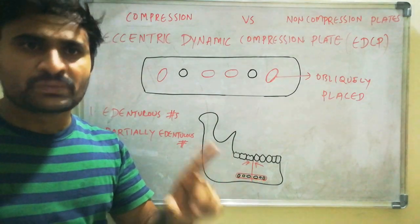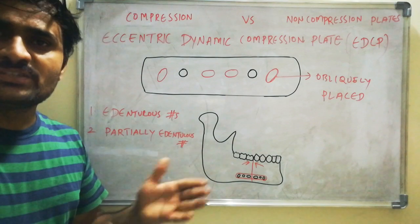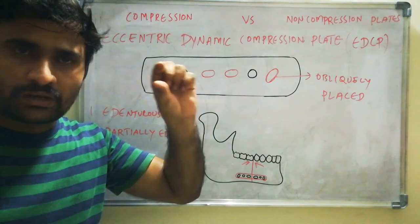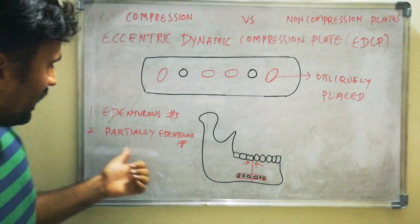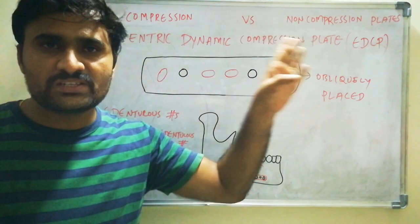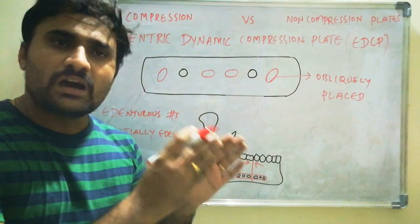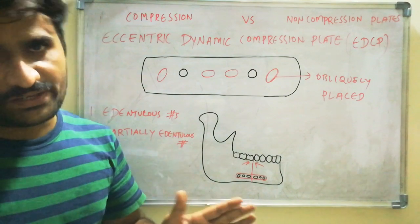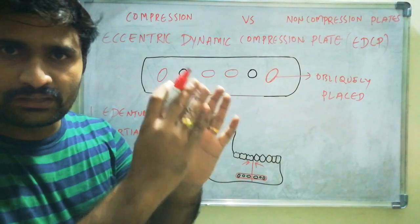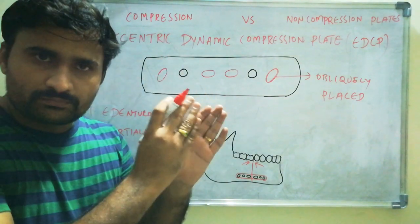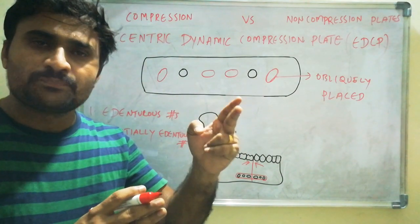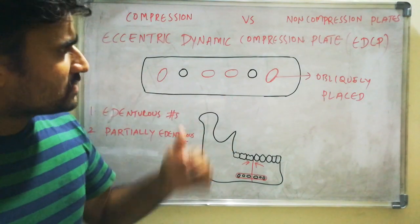EDCP is indicated in edentulous fractures where there are no teeth, so an arch bar cannot be placed, or where less bony height prevents using two plates. It is also used in partially edentulous fractures. Generally, compression plates are sparingly used; we prefer non-compression plates. There are two types of compression plates: the dynamic compression plate and the eccentric dynamic compression plate. One more way to produce compression of fractured fragments is lag screw fixation — with two lag screws, you can produce some compression at the fractured ends. This is all about compression plates.